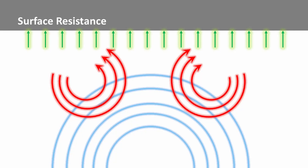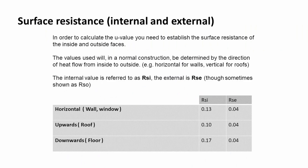We also need to think about surface resistance. Surface resistance can be thought of as a constant value given within the calculation, which relates to the transfer of heat between radiation, convection, and conduction. There are set values for surface resistance within the calculation. If we are looking at horizontal flow for a wall or a window, we have an internal RSI of 0.13 and an external RSE of 0.04, and there are similar values for the other heat flow directions.